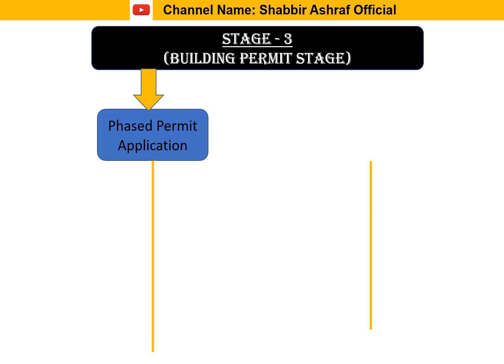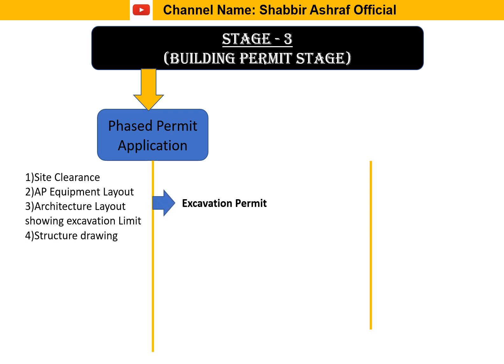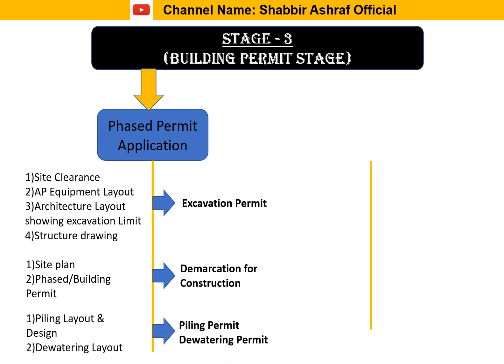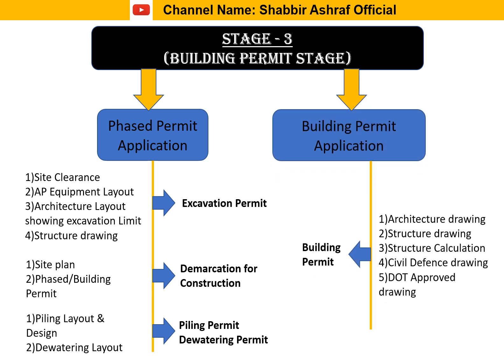Stage three has two types: phase permit and final permit. For the phase permit, we first apply for the excavation permit, which requires site clearance, equipment layouts, architecture layout showing excavation limits, and structural drawings. After receiving the excavation permit, we apply for demarcation for construction. Before excavation starts, if soil test indicates piling or dewatering is needed, we apply for the piling permit or dewatering permit accordingly.